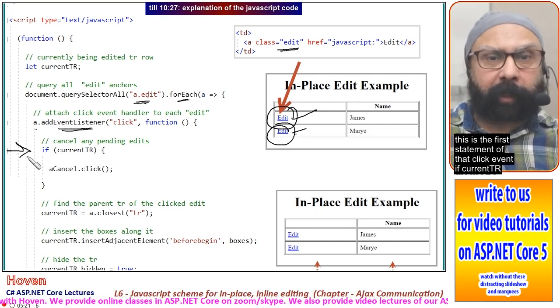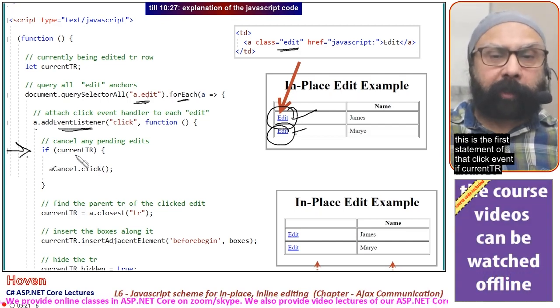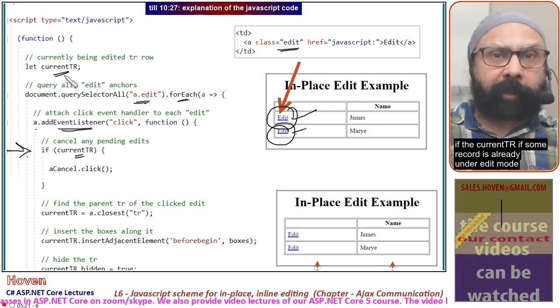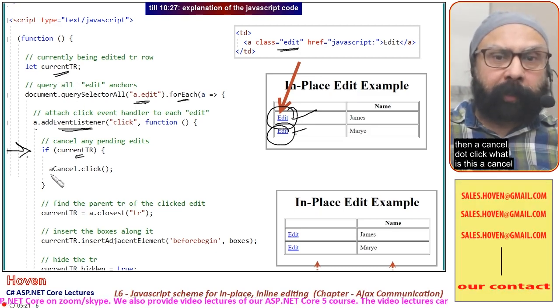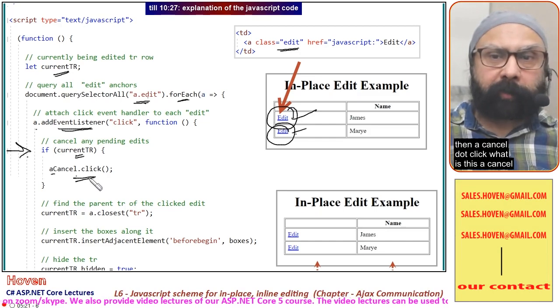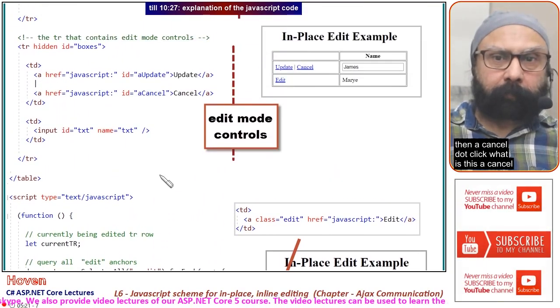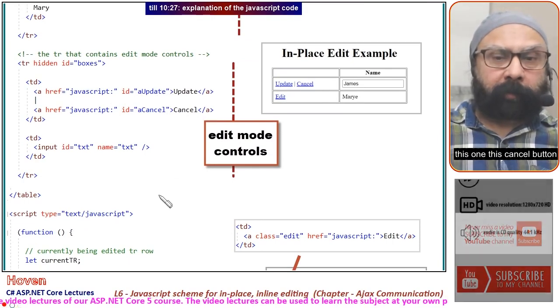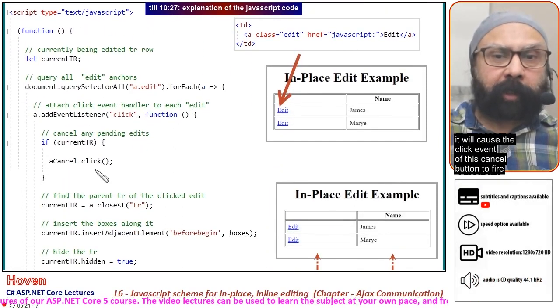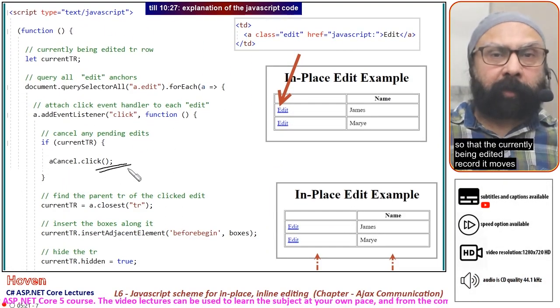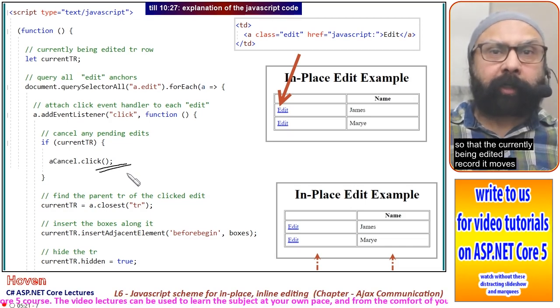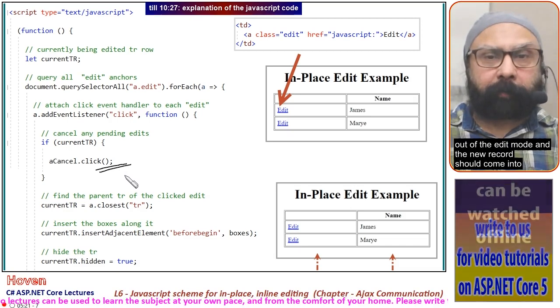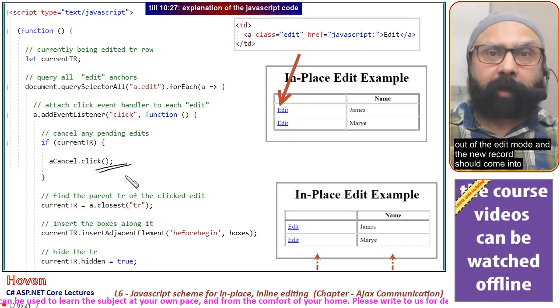This adds a click event to all these edits. What happens in the click event? The first statement: if currentTr—if some record is already under edit mode—then aCancel.click. What is this aCancel?